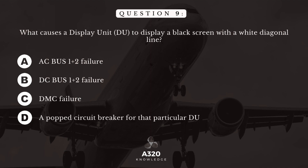Question 9. What causes a display unit to display a black screen with a white diagonal line? A. An AC bus 1 plus 2 failure. B. A DC bus 1 plus 2 failure. C. A DMC failure. D. A popped circuit breaker for that particular display unit.